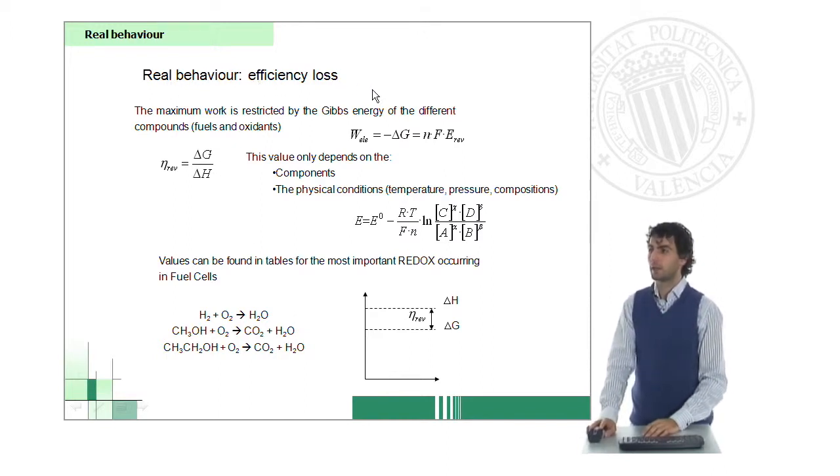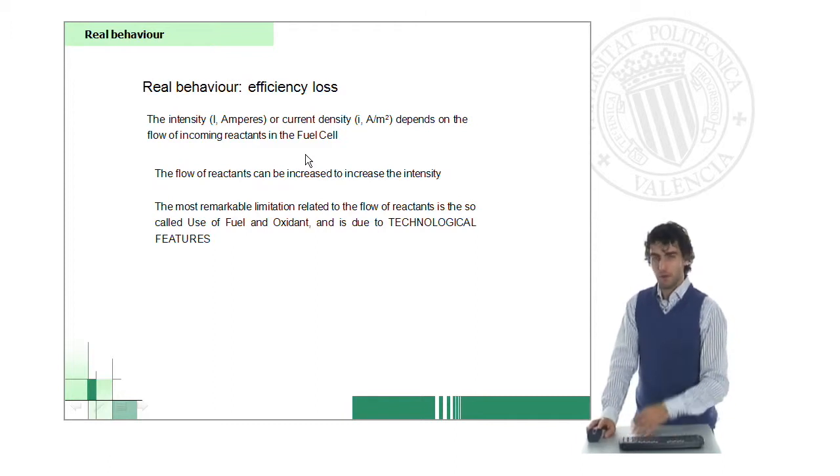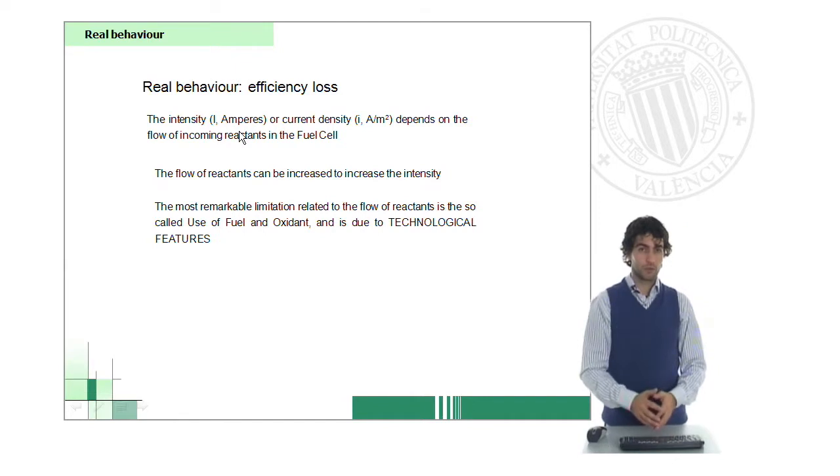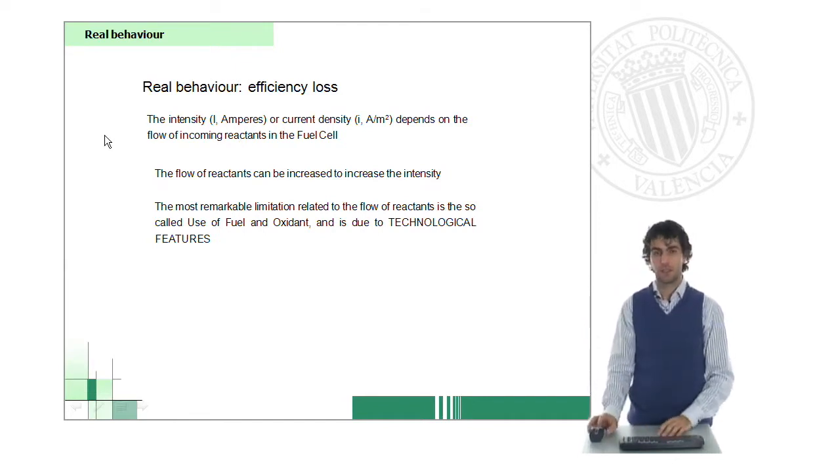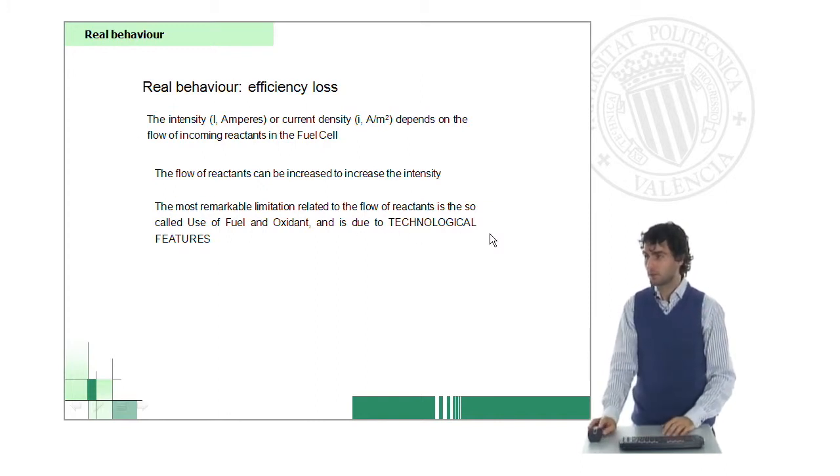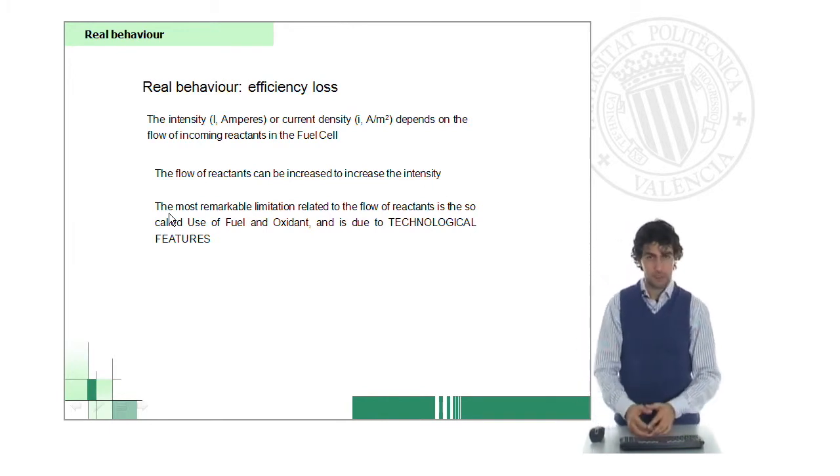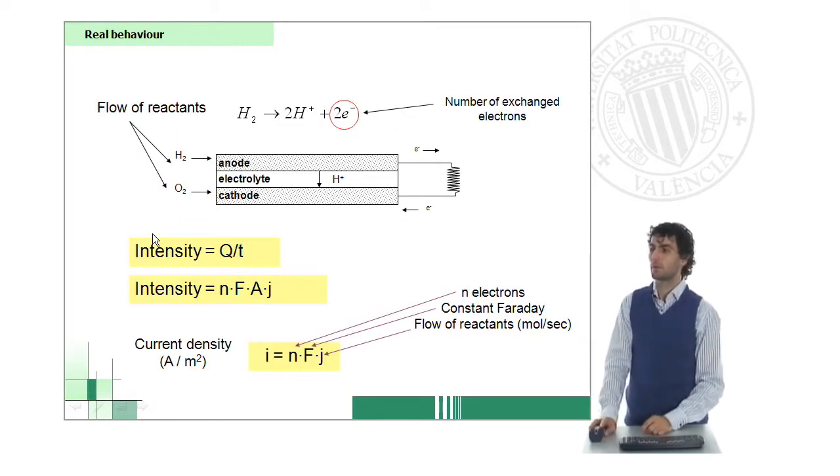Coming back to how to calculate this efficiency loss, the reversible efficiency is mainly due to thermodynamic reasons - the difference between the enthalpy and the free energy of the different reactions. We won't get much farther here because we've explained this in other courses. But apart from this loss of efficiency, we'll have to deal with other problems. The intensity that we will have on the fuel cell will not be exactly the same as the flow of fuel that we have at the entrance. This will be mainly caused by technological features.